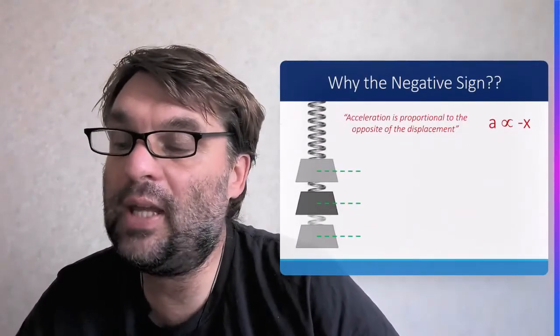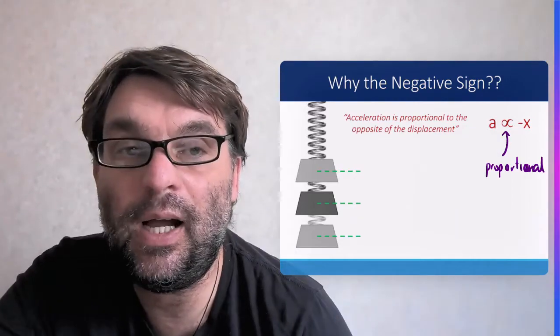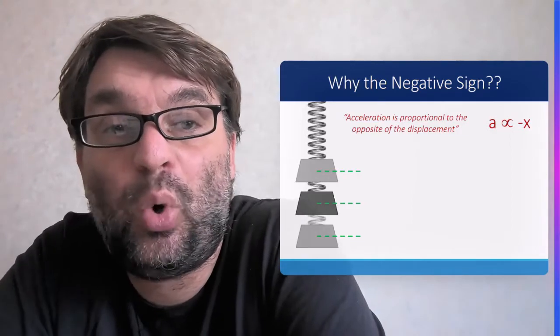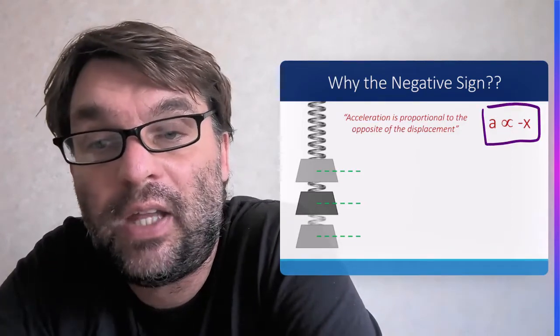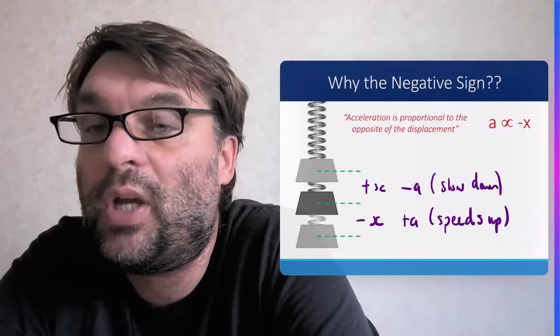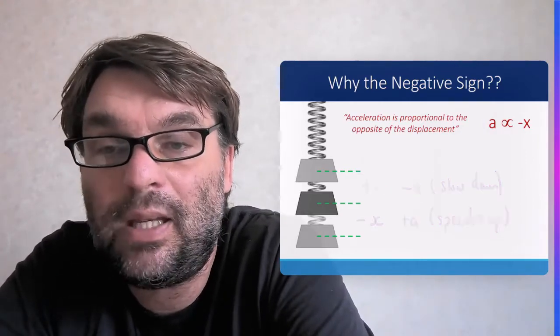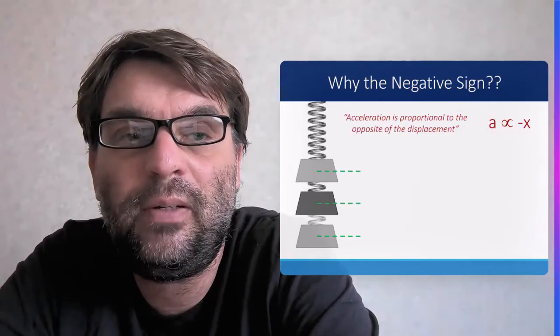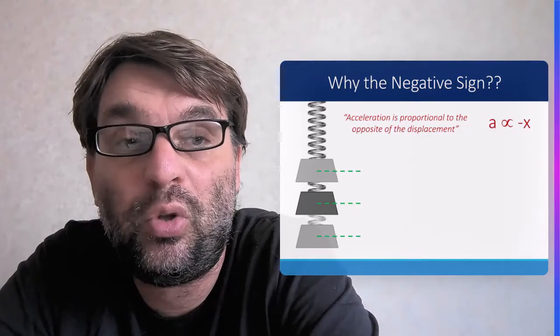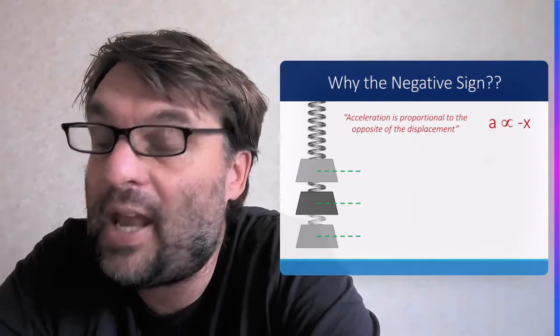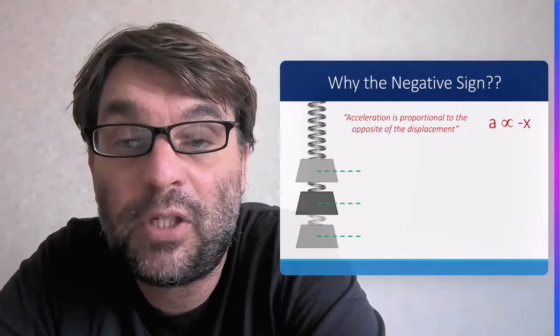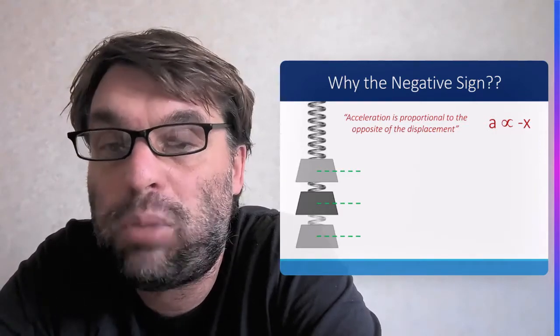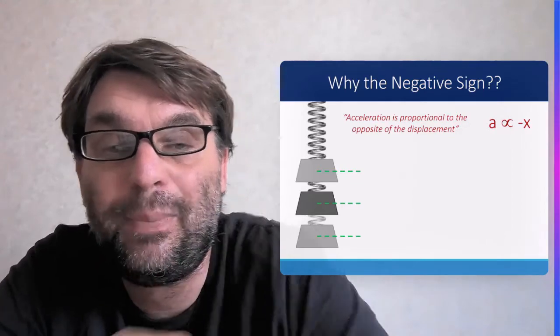So why do you get a negative sign for this displacement? Acceleration essentially is proportional to the opposite of the displacement. So as you're going up, you've got plus x plus displacement, that's going to be a negative acceleration, because the acceleration is going to be proportional to the negative of the displacement. And as you go down, there will be a negative displacement, negative x. So therefore, the acceleration will be positive as it goes down from its reference point at the beginning.